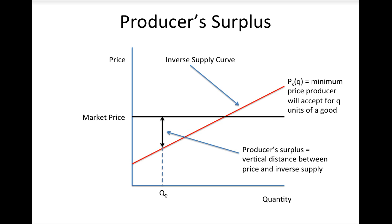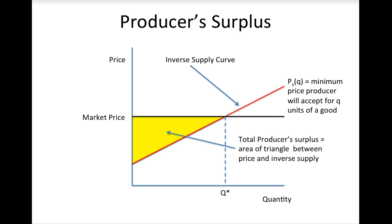To calculate the producer surplus for the total amount that a producer sells, simply add up these vertical distances. The sum of these distances will be the area of the triangle that is below the price line and above the inverse supply curve. This concludes this presentation on consumer and producer surplus. You will have a chance to use these tools to analyze the effects of changes in market conditions on producers and consumers next time in class.